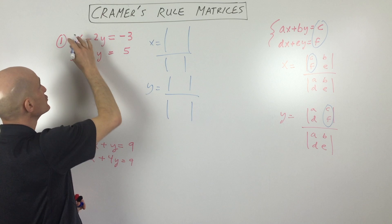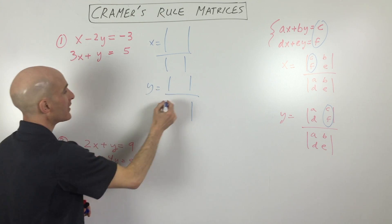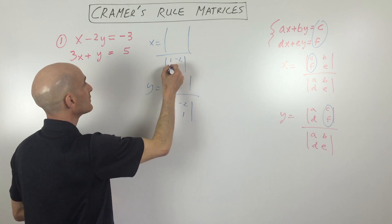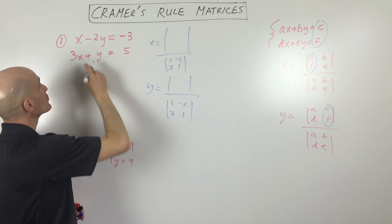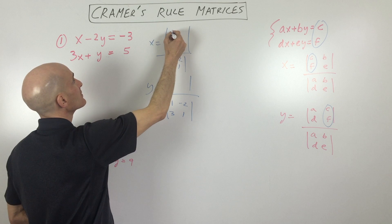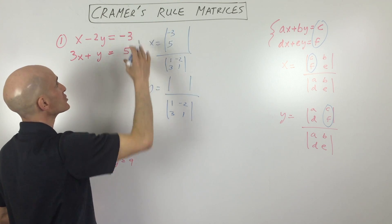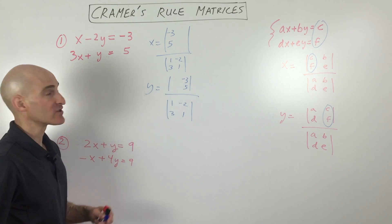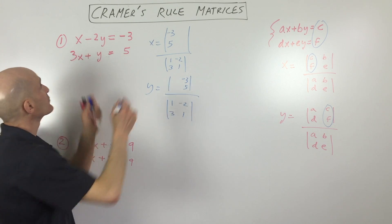So for the denominator, we're just going to use one, negative two, three, and one. One, negative two, three, and one. But for the numerators, when we solve for x, we're going to replace the x coefficients with the solutions. We solve for y, we're going to replace the y coefficients with the solutions. And then we're going to proceed here.